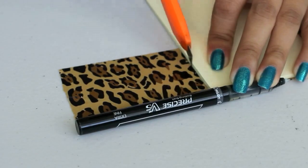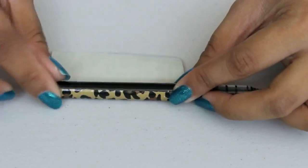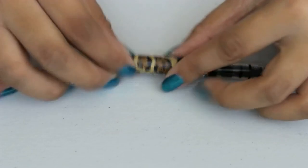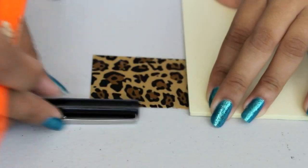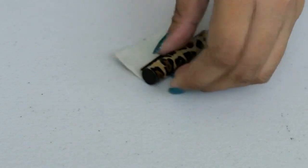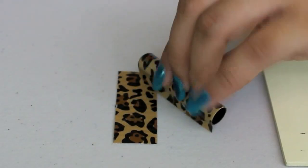Duct tape comes in really fun patterns as well, so I'm taking this animal print one and wrapping my pen in it. I think it looks really cute and is an easy way to customize your pens. You can also just leave it like this if you don't want to add any petals.